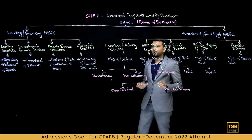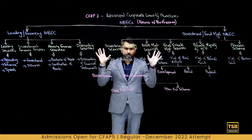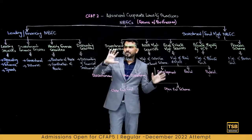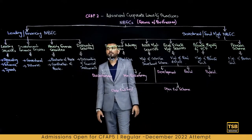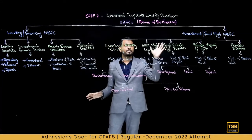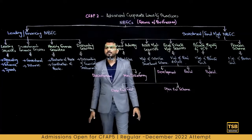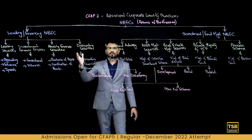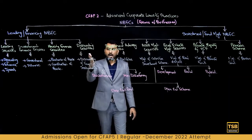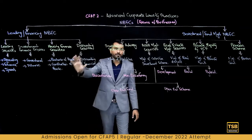First of all, one important thing here is the flowchart — the forms of businesses. I will discuss it with you, and then we will go into detail. Basically, you have two forms of businesses available here for NBFCs: Lending Financing NBFC and Investment or Fund Management NBFC. When we talk about Lending Financing NBFC, here you have Leasing Services, Investment Finance Services, Housing Finance Services, and Discounting Services.